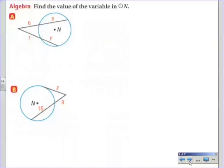So now we will apply it. Problem A, the point is outside the circle, so I know it's either case 2 or case 3. I see two secant segments, so that's going to tell me it's case 2. I'm going to take the entire segment, which is 6 plus 8, and multiply it by the outer piece, which is just 6. Then I'm going to say that equals the entire segment, which is 7 plus Y, multiplied by the outer piece, which is just 7.